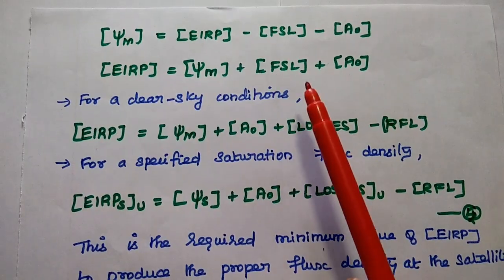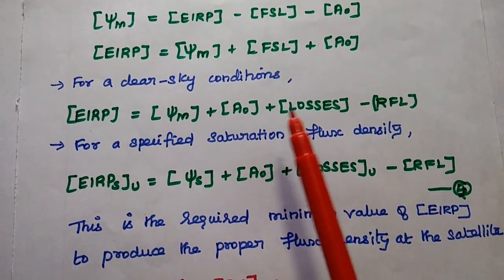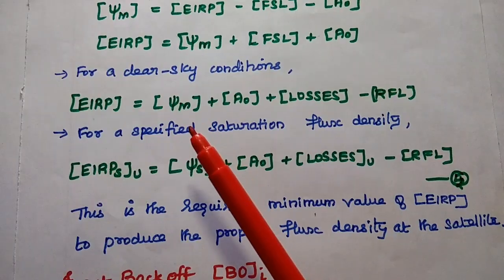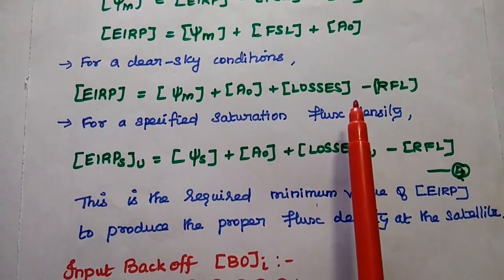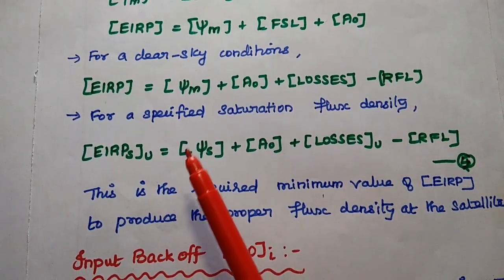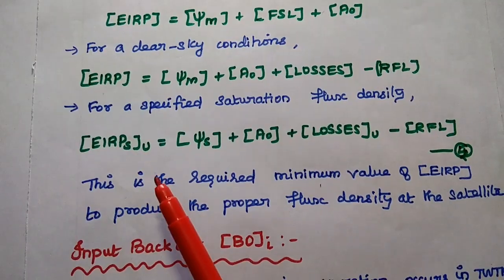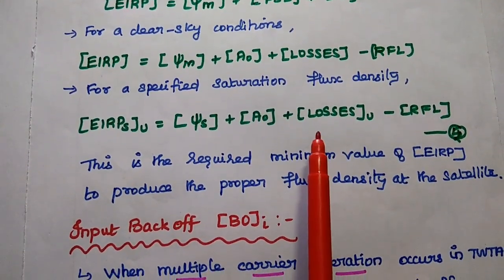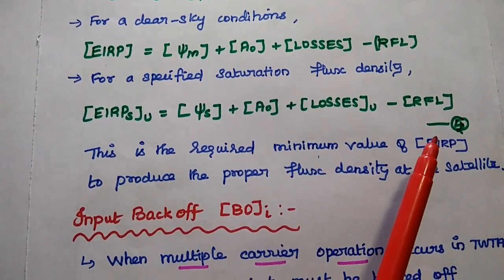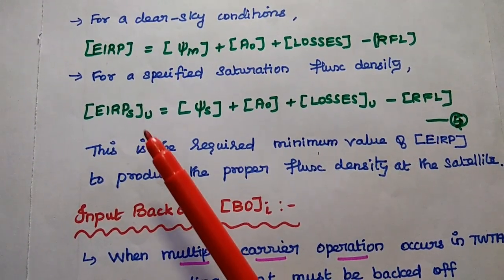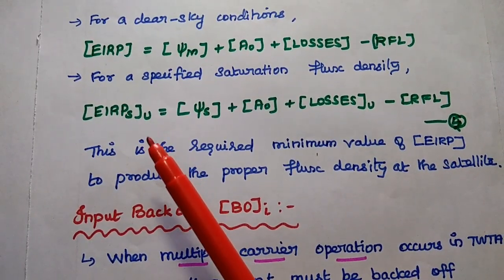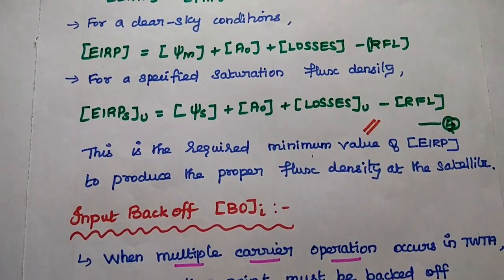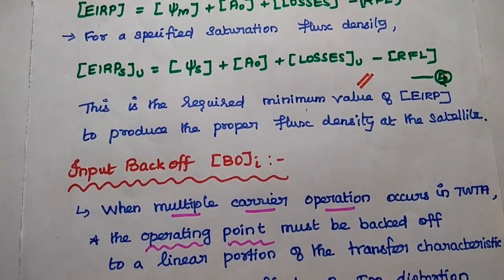Here we can consider only the free space loss, but for clear sky conditions we can include all losses together. So EIRP = ψ_M + A₀ + losses, excluding the receiver feeder loss. But for a specified saturation flux density, this EIRP is represented with the term S: EIRP_U = ψ_S + A₀ + losses_uplink − RFL. This is the fifth equation — the required minimum EIRP to produce proper flux density at the satellite transponder.